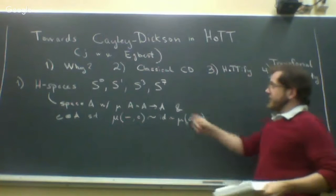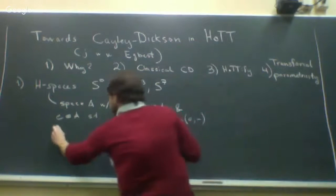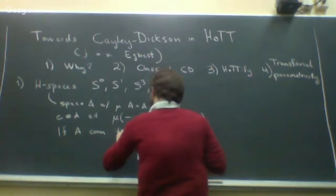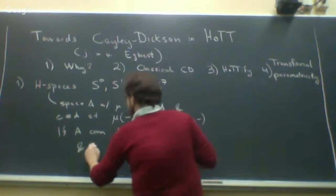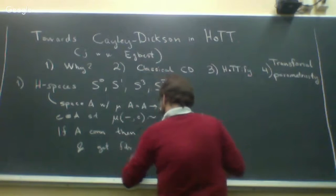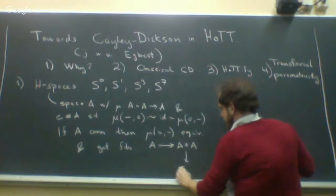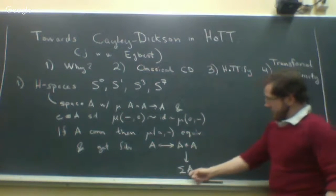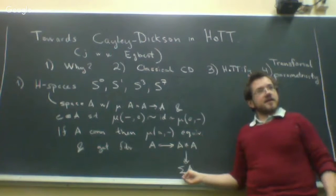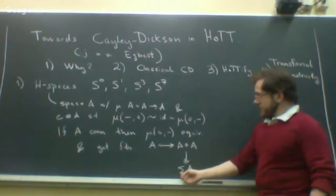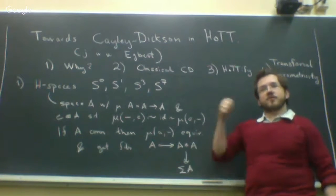It's easy to prove that if A is connected, then multiplying with anything is an equivalence. Furthermore, you get fibrations — if connected, then equivalences, and you get A going into A join A down to the suspension. Speaking now in HoTT, we get a fibration defined by using the induction principle for the suspension, sending north and south to A, and using these equivalences to identify the fibers over the north and south poles along each meridian.